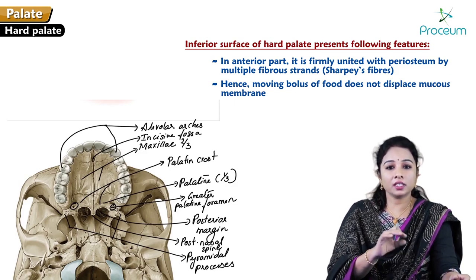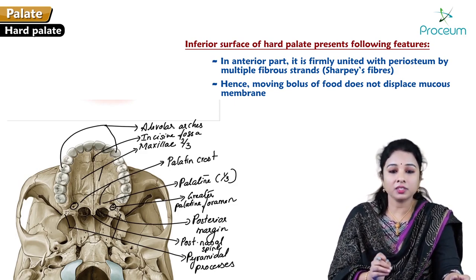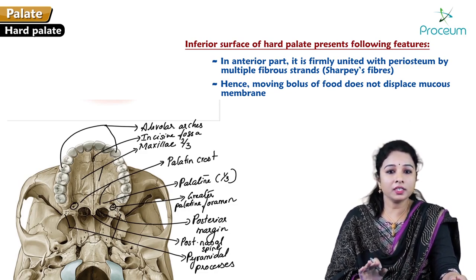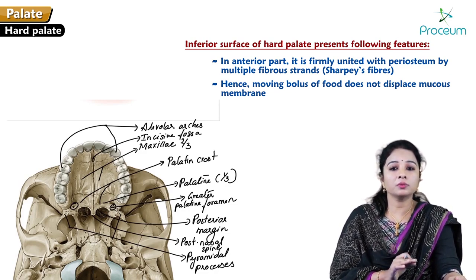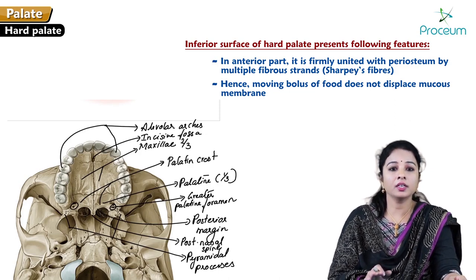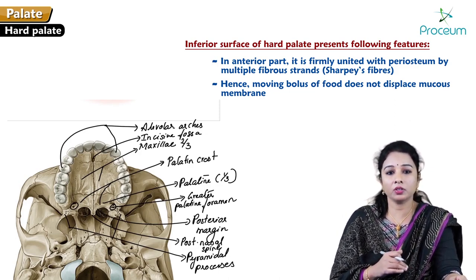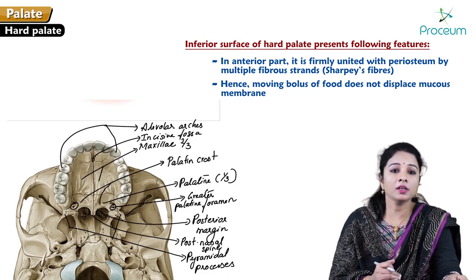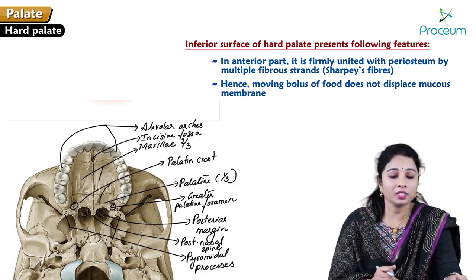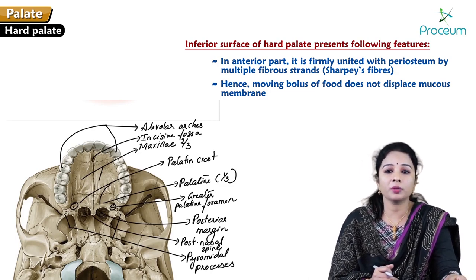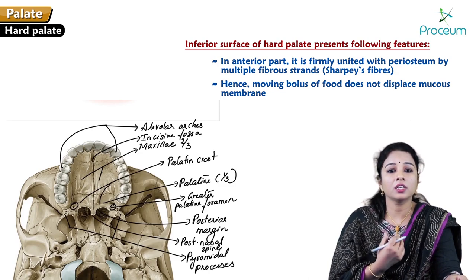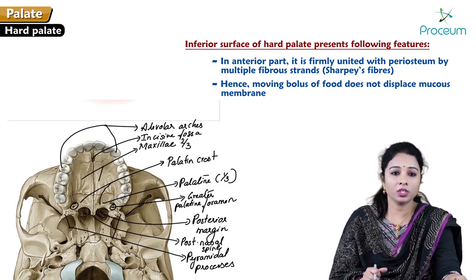The masticatory mucosa is the mucous membrane lining the hard palate. In the anterior part, it is firmly united with the periosteum by multiple fibrous strands called Sharpey's fibers. Hence, a moving bolus of food does not displace the mucous membrane.